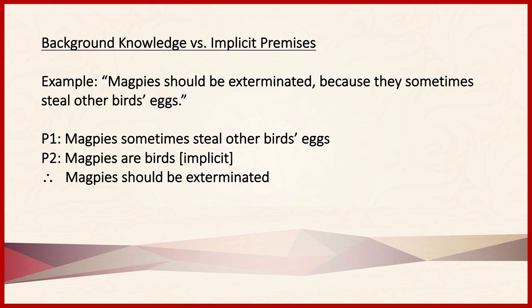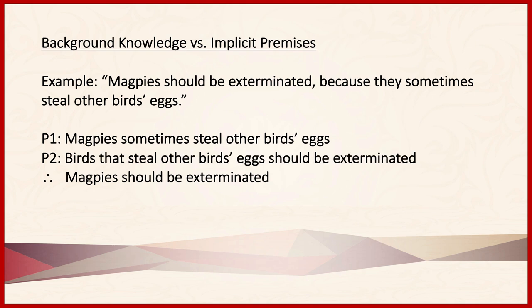The given premise says that magpies sometimes steal other birds' eggs, while the conclusion says that magpies should be exterminated. Simply noting that magpies are birds doesn't really have anything to do with either of these. A much better candidate implicit premise is: birds that steal other birds' eggs should be exterminated. Notice how that closes the logical gap.